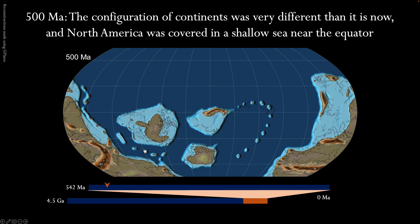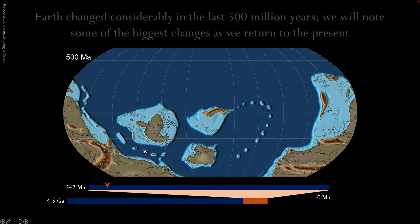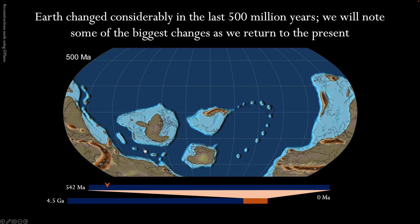500 million years ago, the configuration of continents was very different than it is now, and North America was covered in a shallow sea near the equator. As you can see, Earth changed considerably in the last 500 million years. We will note the major changes as we return to the present.